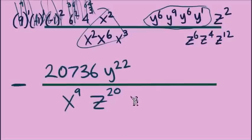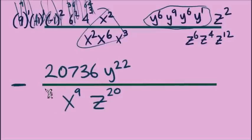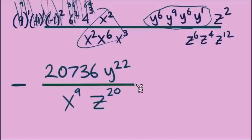All that's left is the cleanup. We verify there are no negative exponents — and there aren't — and that negative sign is perfectly fine. We have 20,736 in the numerator with no number other than 1 in the denominator, so we can't simplify the fraction. And there's our answer.